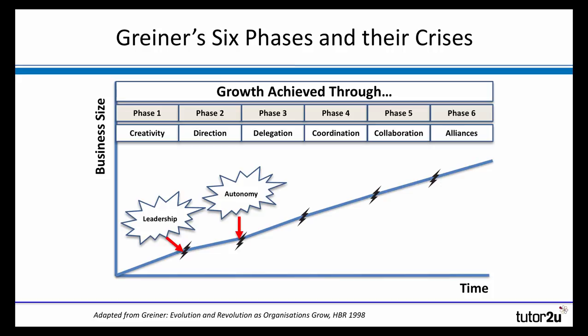That gives the business more direction, but eventually comes another crisis, called the crisis of autonomy. Now the business has functional management, but perhaps the founder or the leader is struggling to let go. As these professional managers come into the business, they start to ask for more control, more autonomy over what they do. For example, the marketing manager may request a marketing budget and some control over how it's spent. That crisis leads the business to enter a new phase of delegation, giving the managers more delegated responsibility.